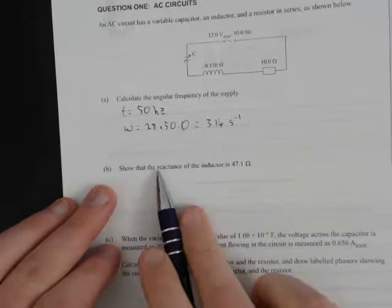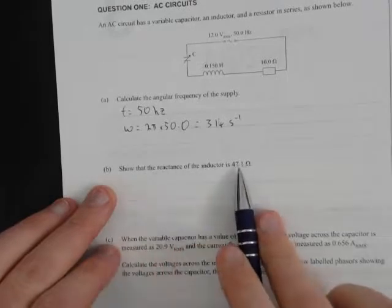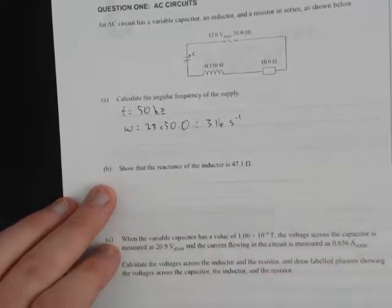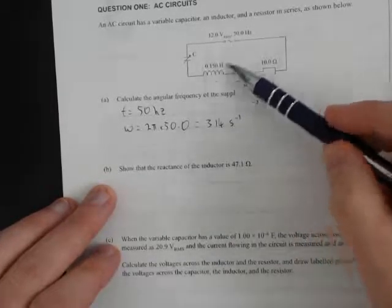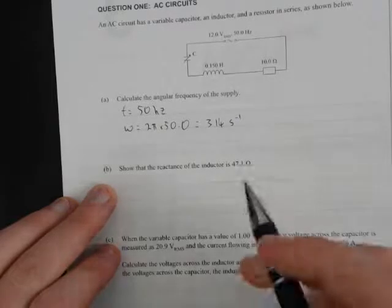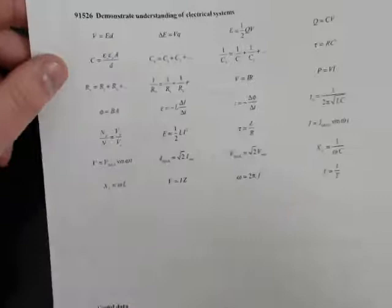Question 1B: Show that the reactance of the inductor is 47.1 ohms. Reactance is essentially the resistance of an inductor—not quite the same, but that's a good way to think about it. Going to our formula sheet, we should know this off by heart.